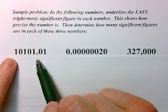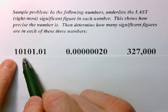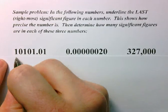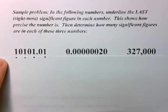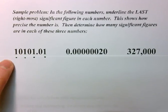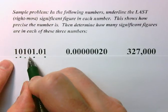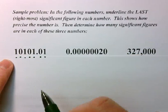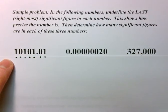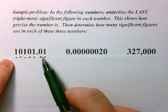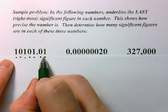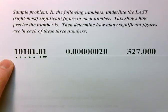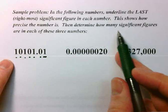So rule A says that any non-zero is significant. So I'm just going to put a little green dot here under each non-zero to show that it is significant. That's rule A. Rule B says that any zero between non-zeros is also significant. So there's one, there's one, and there's one. And already, just using rules A and B, I have identified all of those digits in that number as being sig figs. So I'm going to underline the last one, or the rightmost sig fig, right there.